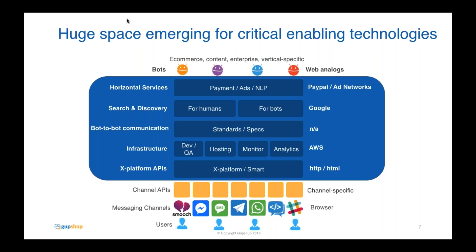Analytics is very important for your chatbot — re-engagement metrics, segmenting users into cohorts, seeing where the drop-offs are, how many users are engaged at day one versus day six or seven. Each of these layers obviously has analogs in the web. For instance, the infrastructure analog would be something like Amazon AWS or Microsoft Azure, providing infrastructure, monitoring, hosting environment, and some level of analytics as well.